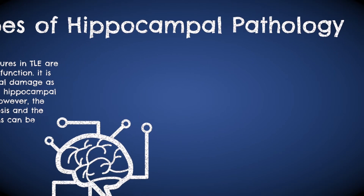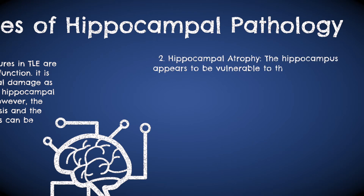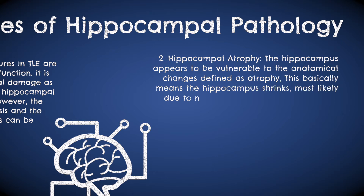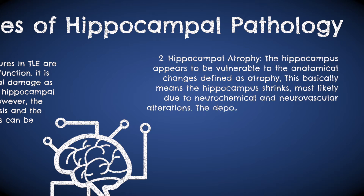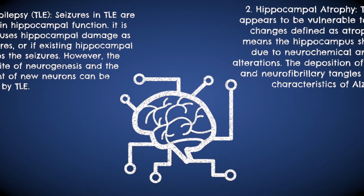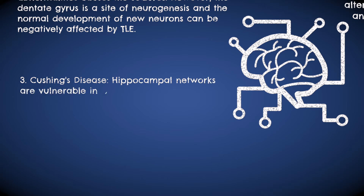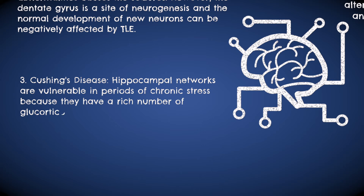Secondly, we need to mention hippocampal atrophy. The hippocampus is vulnerable to atrophy and can shrink in size due to neurochemical or neurovascular alterations. Neuritic plaques and tangles are the hallmark neuroanatomical characteristics of Alzheimer's disease, and these changes are commonly observed in the hippocampal regions. Thirdly, Cushing's disease can be associated with the hippocampus due to the high number of glucocorticoid receptors in hippocampal networks.